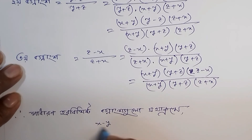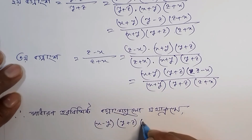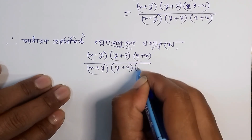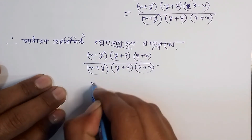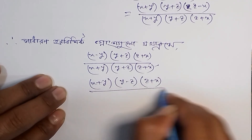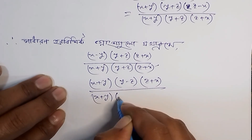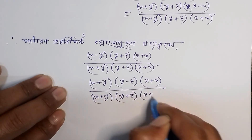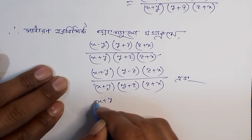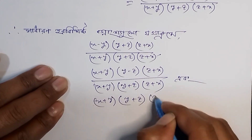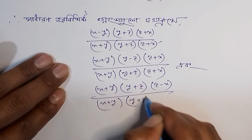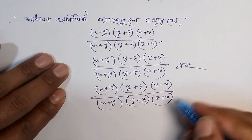Combining all three fractions: (x minus y) into (y plus z) into (z plus x) over (x plus y) into (y plus z) into (z plus x), plus (x plus y) into (y minus z) into (z plus x) divided by (x plus y) into (y plus z) into (z plus x), plus (x plus y) into (y plus z) into (z minus x) divided by (x plus y) into (y plus z) into (z plus x). Ei tinti hochchhe amader result.